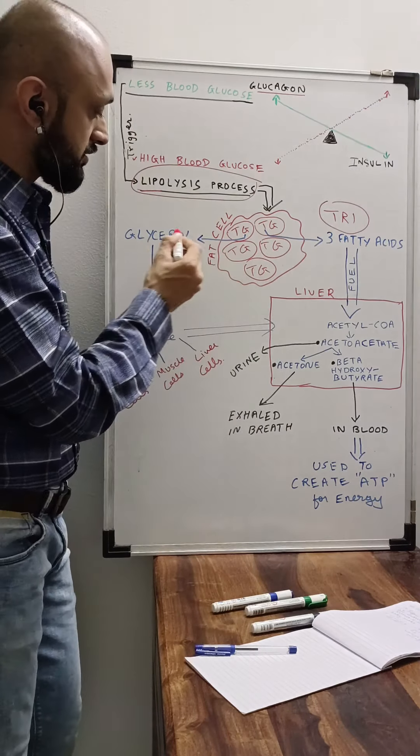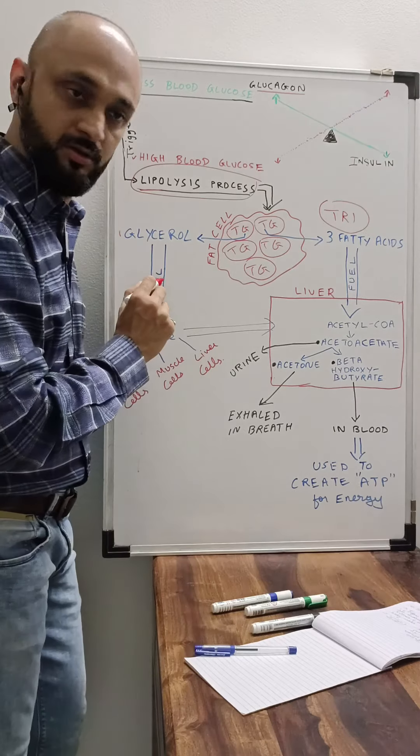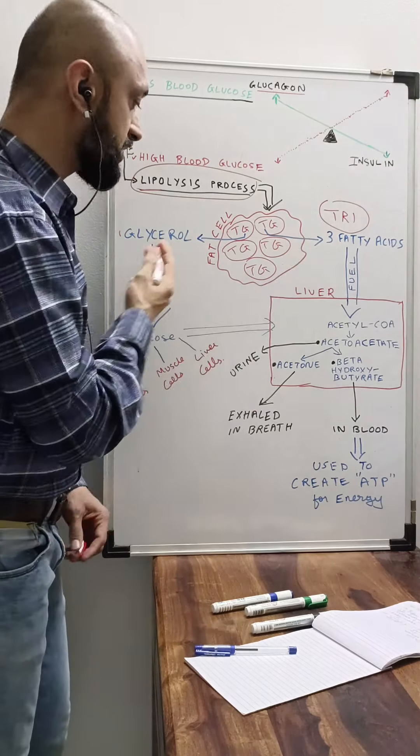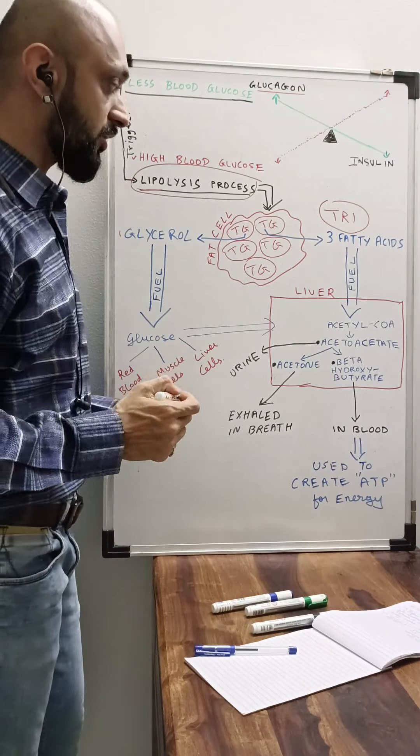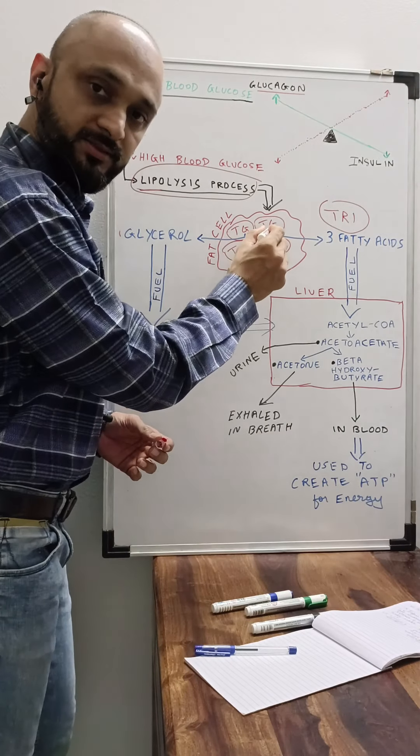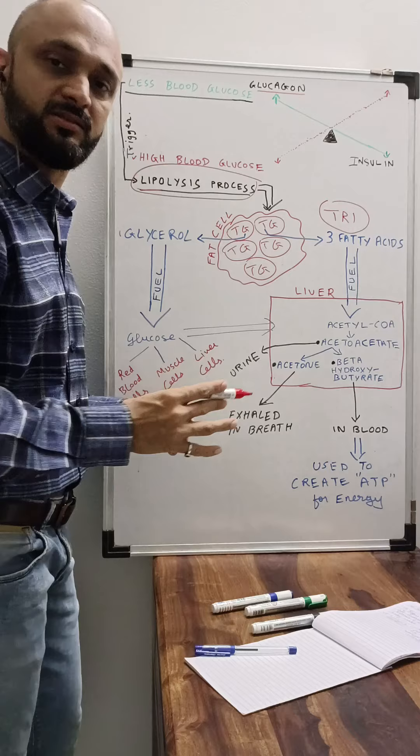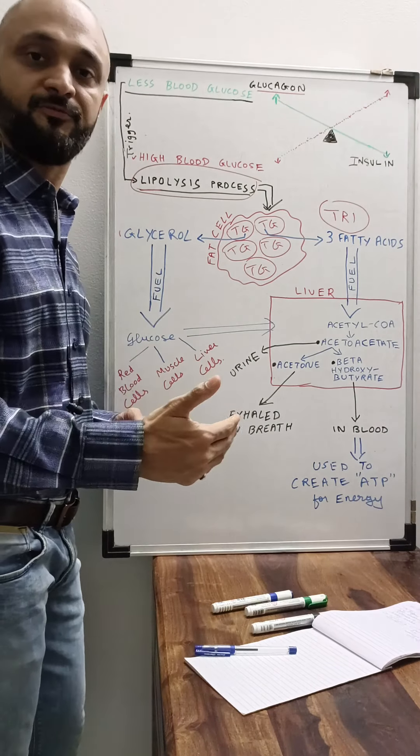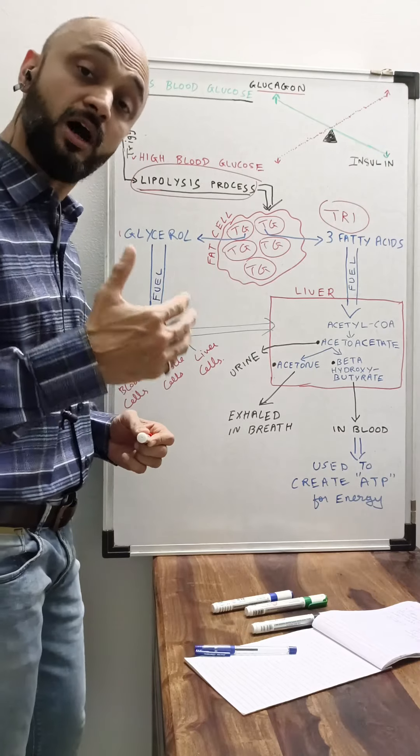From one triglyceride molecule, it gets divided into three fatty acids and one glycerol. The body has already created two energy substrates from the broken triglycerides. This is a very natural normal process of utilizing the fat which is stored in our body, and this is how fat loss happens.